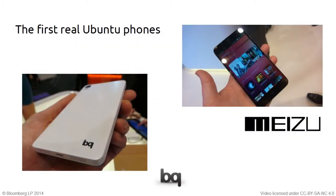Moving on to real soon-now shipping hardware. These are the first two Ubuntu phones. One is from BQ, a Spanish manufacturer — a mid-range quad-core Cortex-A7 at 1.2 GHz, with a PowerVR 3D GPU, 1 gig of RAM, and 16 gigs of storage — the same model that's running Android now. The other is the Meizu MX3, a Samsung 8-core device with a 5-inch screen, a 3D GPU, 2 gigs of RAM, and various camera sizes.